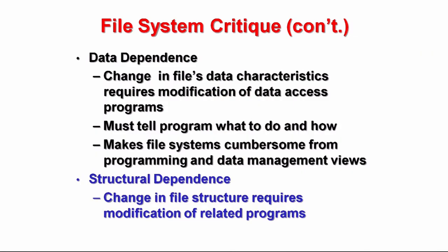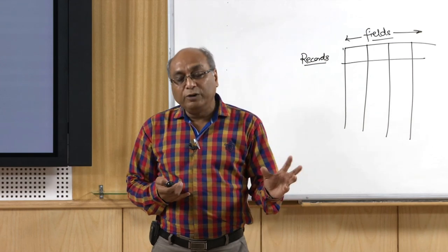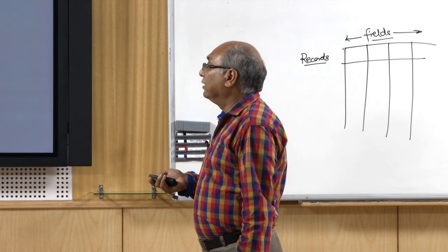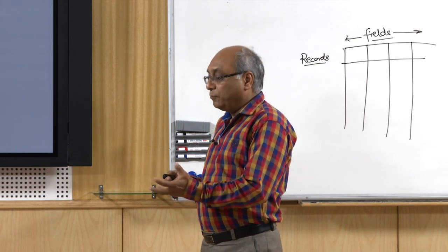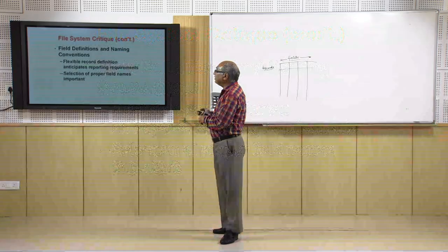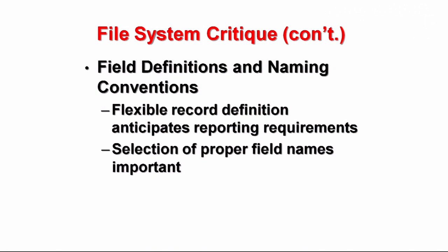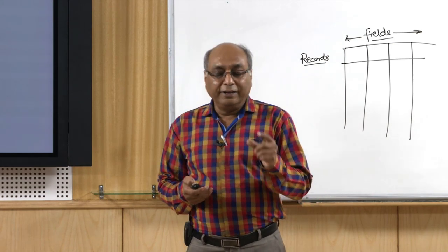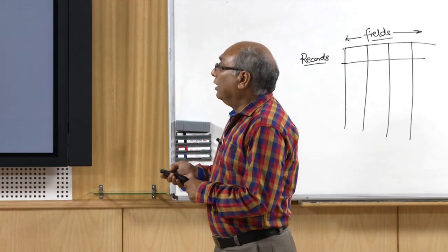The change in a file system requires modification of related programs. Every time you change something in a file, its naming, or add a new file, you have to change the programs again. This is not good practice. Field definition and naming conventions are also limited and inflexible. The selection of proper field names is very important in a file system, along with attention to the length of fields and use of unique record identifiers — many things have to be taken care of when using a file system.